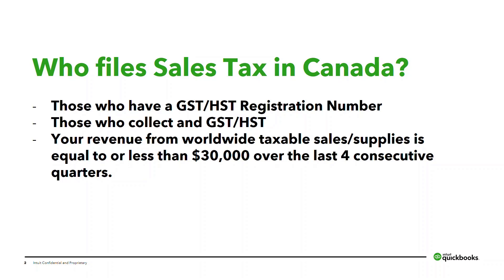Whether you remit monthly, quarterly, or annually depends on your setup with CRA. The CRA has an in-depth guide on what items are taxable, tax-exempt, and zero-rated. The difference between those codes allows you to claim certain items as input tax credits or ITCs on your GST-HST returns to recover the GST-HST paid. It's best to consult with CRA or your accountant on these specifications so you're recording your transactions correctly in QuickBooks Online.